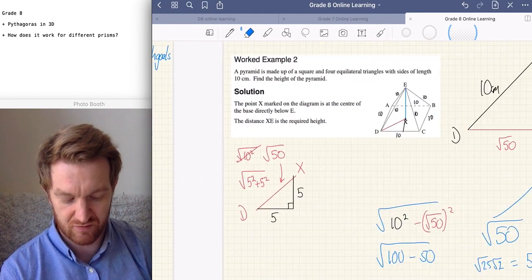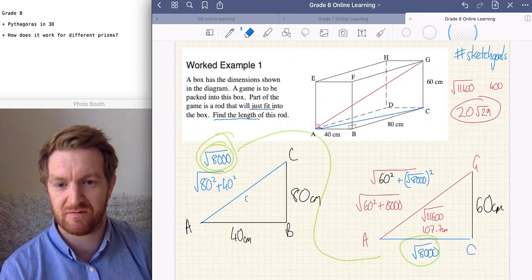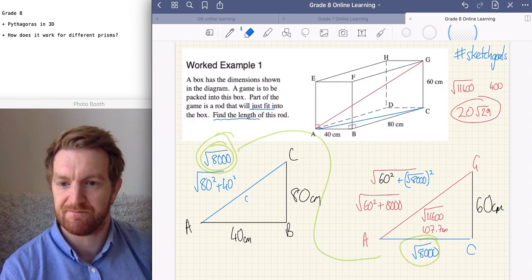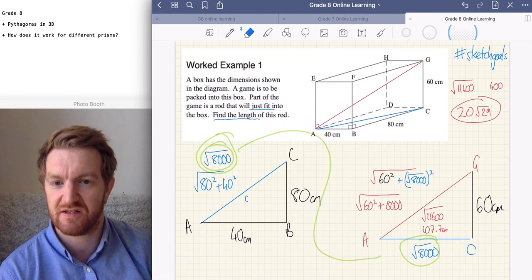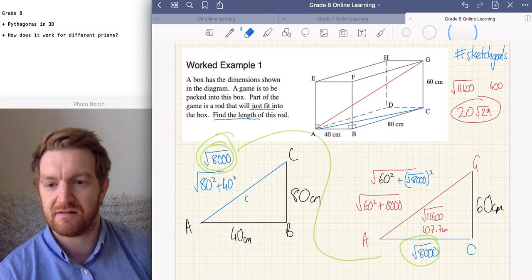So, Pythagoras in 3D. Just remember, draw sketches and keep things. Let's go back to that very first one. You keep it as a root, it makes your life much easier. Have a go at these. Draw some sketches. Use your book to help you. The sketches don't need to be to scale. And, keep things as roots.